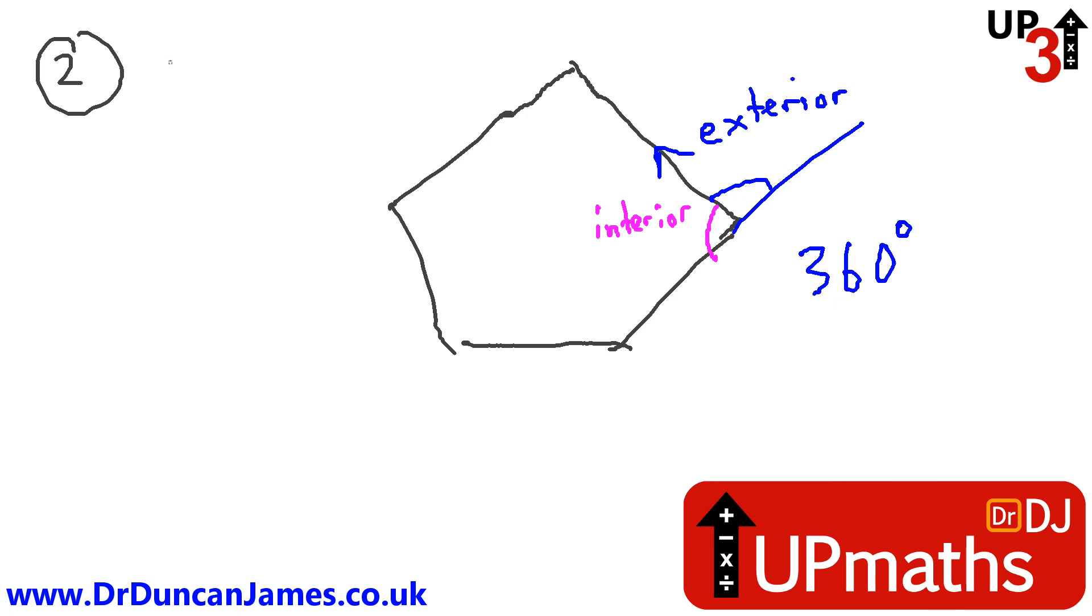Now, the exterior, which means, if it is a regular polygon, let me just write that out. If it's a regular polygon, that means that all the sides and all the angles are the same, which means the exterior angle must just be 360 divided by n, which is 72 degrees.